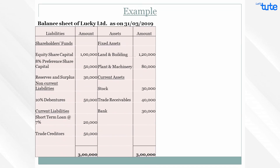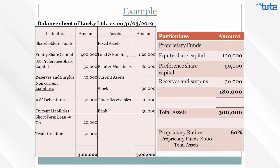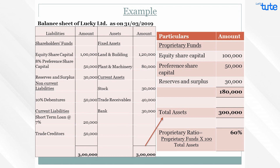Let's calculate the proprietary ratio for the same example. Proprietary funds include equity share capital of 1 lakh, preference share capital of 50,000, and reserves and surplus of 30,000, totaling 1,80,000. This is divided by total assets of 3 lakhs, arriving at a ratio of 60%.